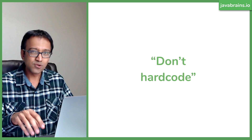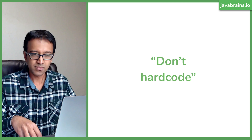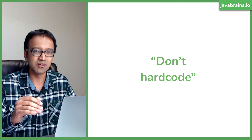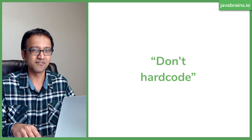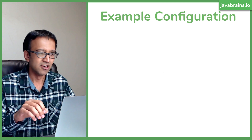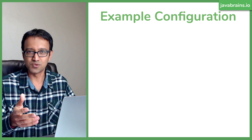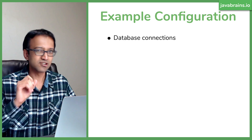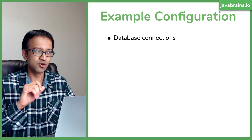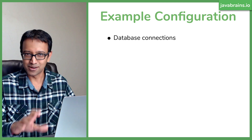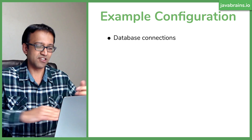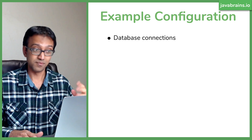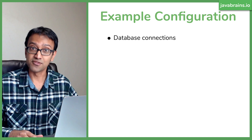What do those configuration values actually look like? With microservices, you're very likely going to have database connections — connection strings and credentials. That's a classic example of configuration.